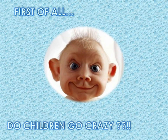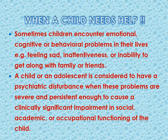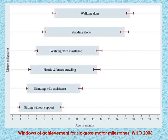First of all, we ask ourselves — this is not about craziness, but about the problems we have: cognition, attention, concentration, memory, and so on. Who is a normal child? Every child is unique, and what's normal is a range.